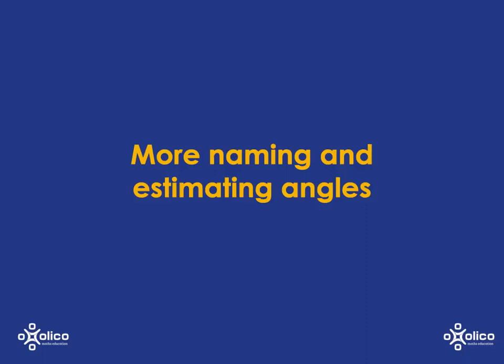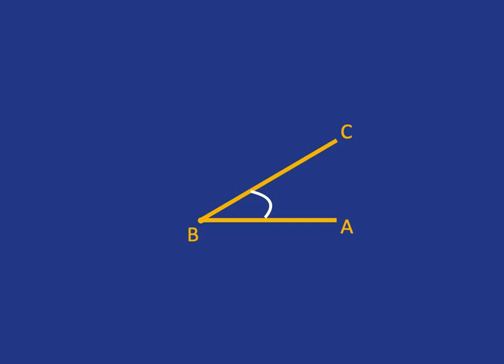Let's have a look at a couple more things about naming and estimating angles. This angle here, angle ABC, is somewhere between 0 and 90 degrees. I estimate it's probably around 30, 40 degrees, but basically it's between 0 and 90 degrees. Because it's between 0 and 90 degrees, we call it an acute angle.